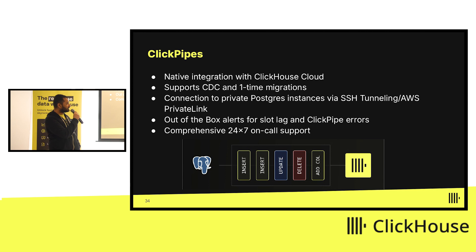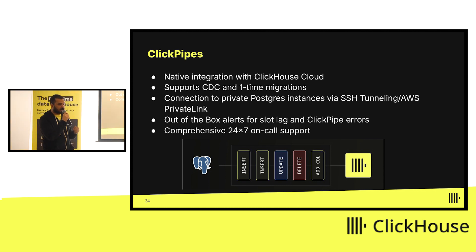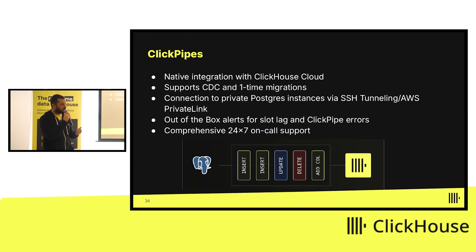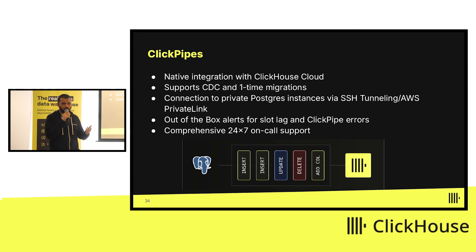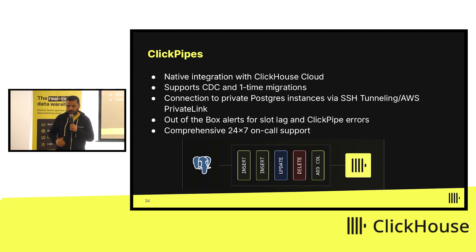We also support out-of-the-box alerts for slot lag and ClickPipes errors. During replication, bursty workloads or long-running transactions can cause slot lag to rise. To make sure your disk doesn't run out of space, we have integrated alerts, and we send real-time alerts for any pipeline errors — for example, if you change your Postgres password and that breaks the pipeline, you'll be notified immediately. We also provide 24/7 round-the-clock support so your pipelines are always working.